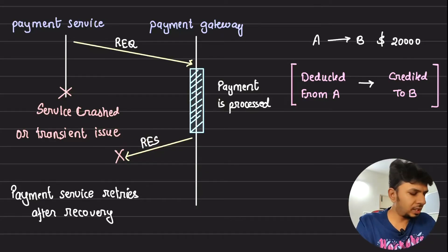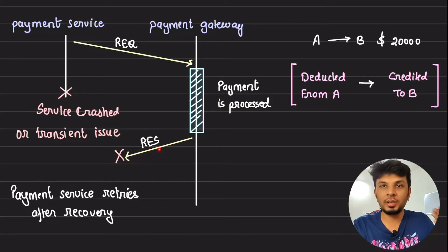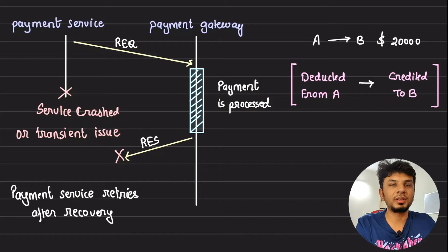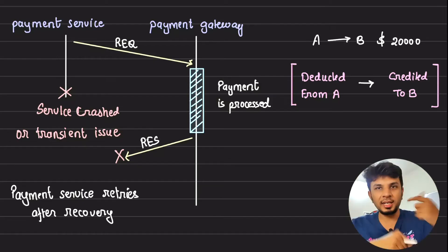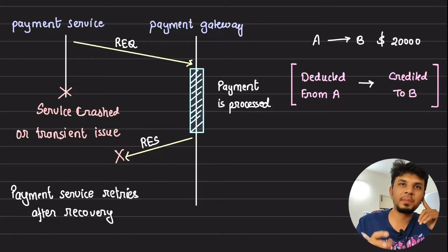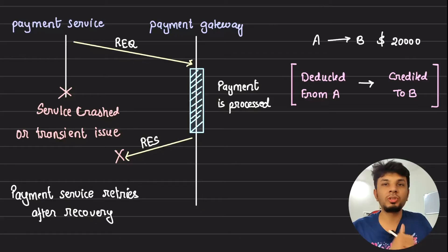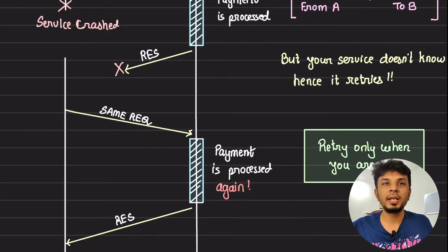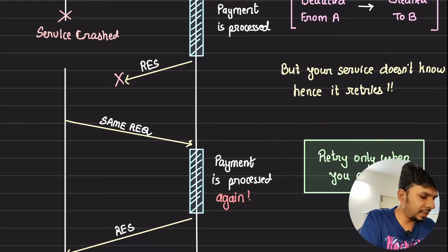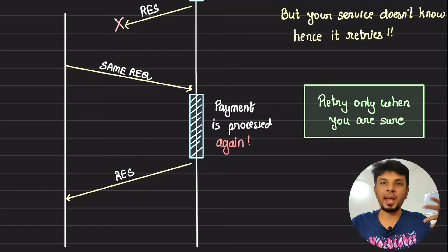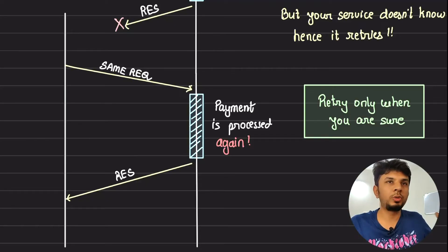There are two possible reasons: first, the response didn't reach the service because of a network partition or outage; or the payment service crashed because of a transient issue. Once the service got back up, it retried the transaction after recovering, because it saw that the payment appeared unprocessed. So it retried due to some business logic, async workers, or similar. In either case, the payment service is retrying — either after recovering or because it never received the response.